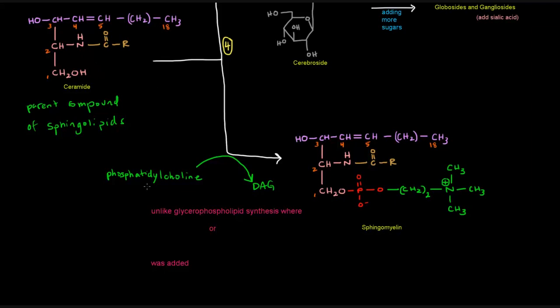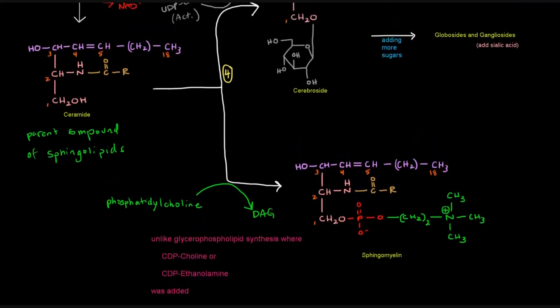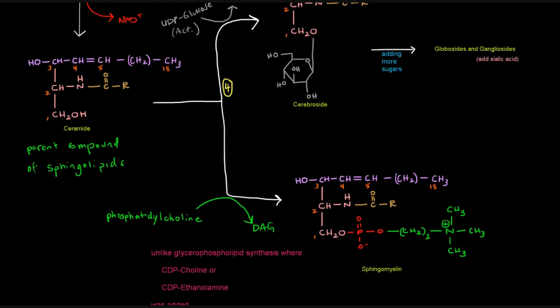Basically, the phospho-alcohol portion of phosphatidylcholine would come off and attach to ceramide to make the sphingomyelin. This could work with other glycerophospholipids specifically, like phosphatidylethanolamine or phosphatidylserine. This here is a little bit different than glycerophospholipid synthesis where we just added a CDP choline or CDP ethanolamine to get the polar head group attached. In this case, we actually have to take another lipid and basically steal its polar head group. I hope that video wraps up sphingomyelin synthesis fairly well. Thank you for watching.